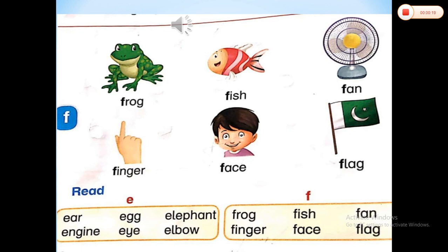The sound of letter A is 'a', B, C, D, E. Today we are going to read the words that start with the letter F. Please repeat after me: F — frog, F — frog, F — fish, F — fish.